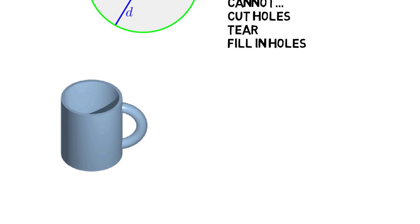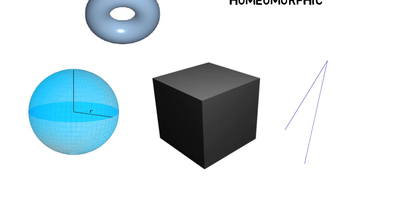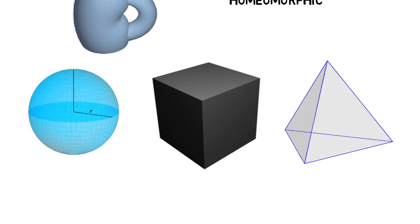When two shapes are topologically the same, we call them homeomorphic. So a sphere, a cube, or a tetrahedron are all the same in topology, and are considered homeomorphic because we can morph them into each other. And one thing you'll do in this class is prove that two things are homeomorphic.